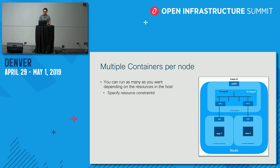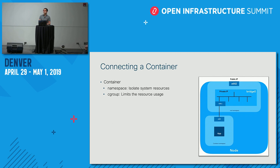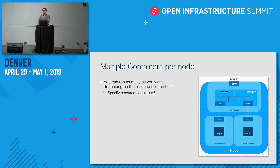A container is just a process or group of processes running on a different set of namespaces. For this talk, the only namespace we're referring to is the networking namespace. This container is connected to the main namespace via the Linux bridge. Behind the scenes, the container runtime also limits the use of networking resources using another Linux feature called cgroups.